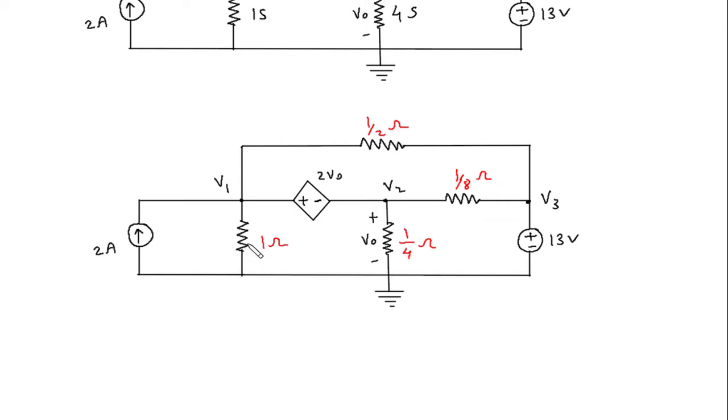Now we will assume the direction of current. Let's say this current I1, this is current I2, and this is current I3, this is current I4.